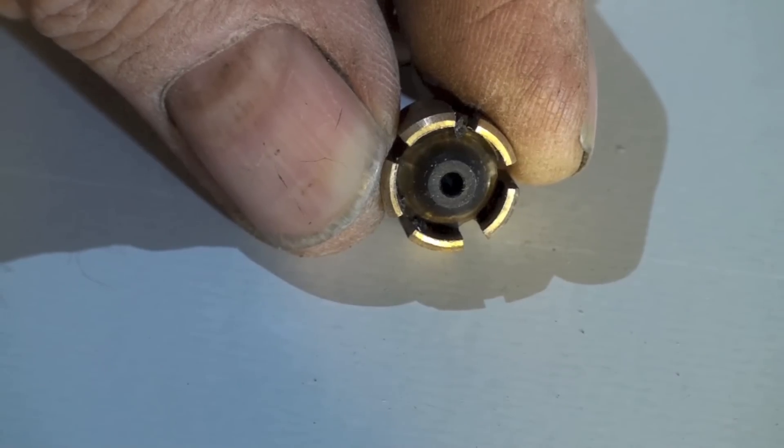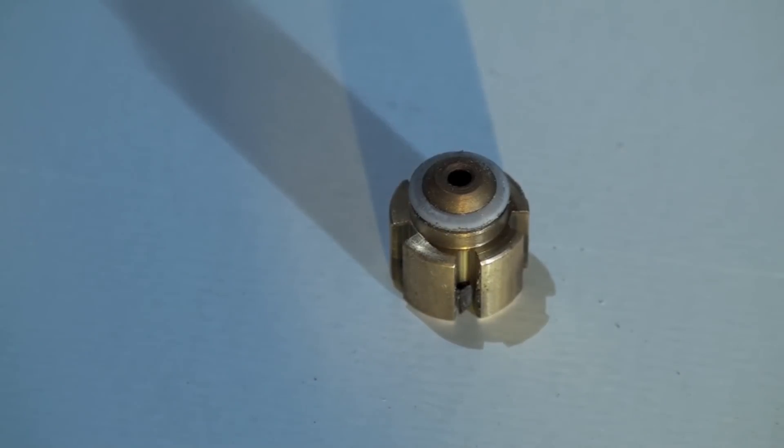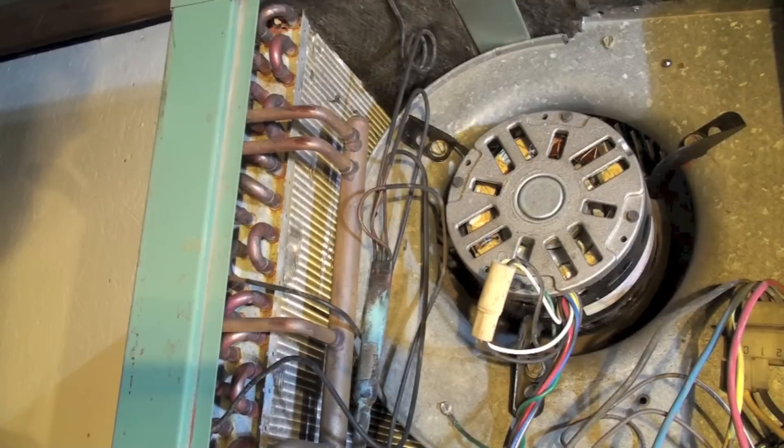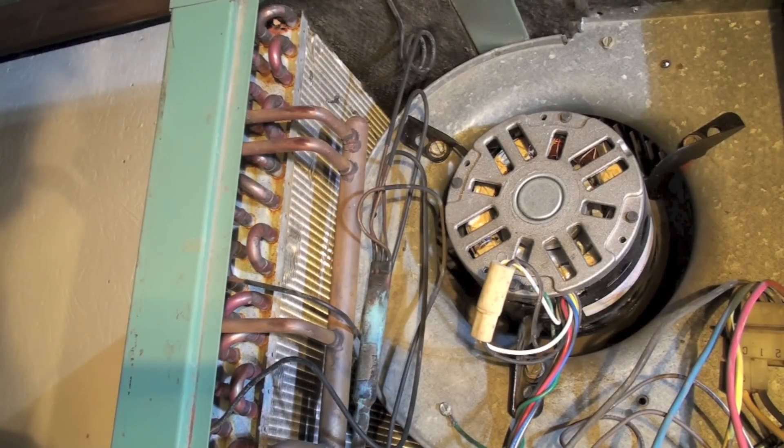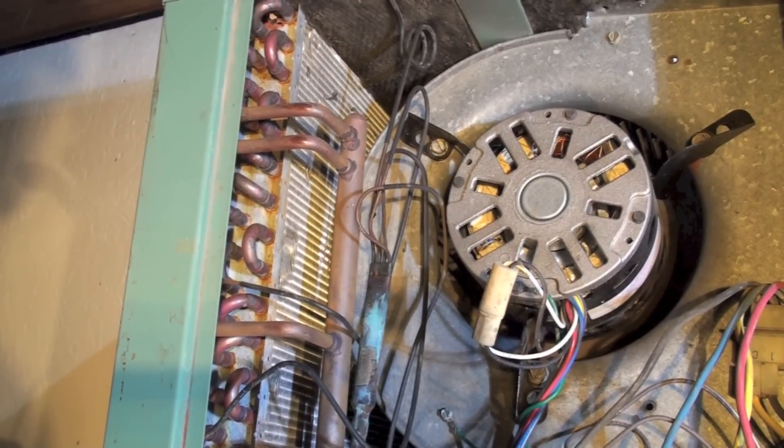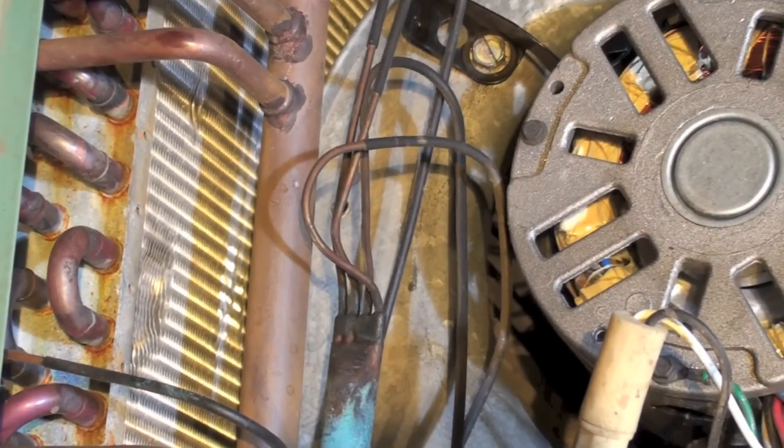That's all it is to these little fixed orifice devices. We used to use capillary tubes. Here's an example of a coil, an air conditioning coil that uses a cap tube feed.